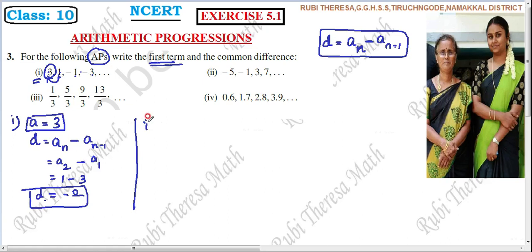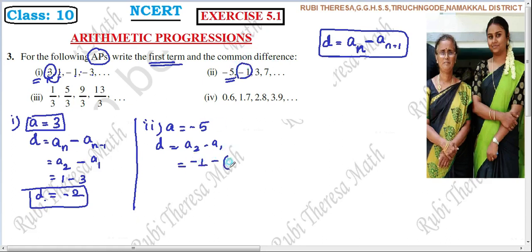Next, the first term of this sequence is minus 5, so A equals minus 5. How do we find the common difference? Second term minus first term. The second term is minus 1 and the first term is minus 5. So D equals minus 1 minus of minus 5, which is minus 1 plus 5. Since the symbols are different, we subtract: 5 minus 1 equals 4. The greater number takes the plus sign, so D equals plus 4. Here the first term is minus 5 and the common difference is 4.